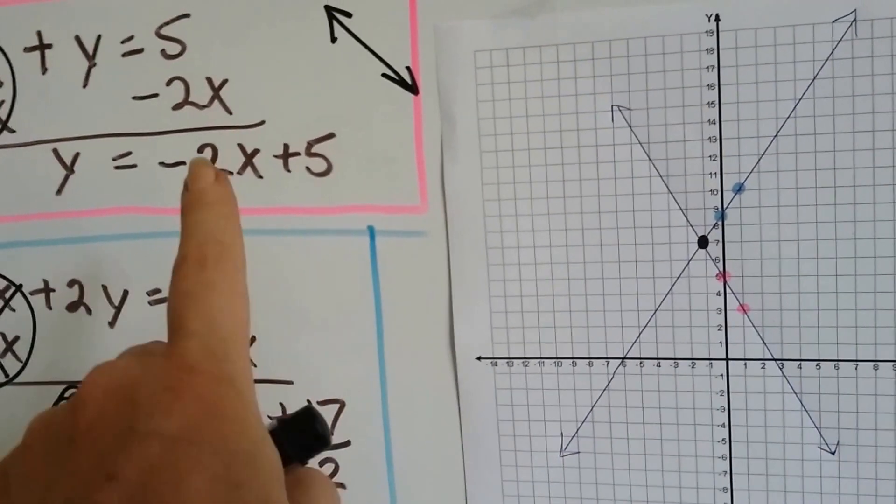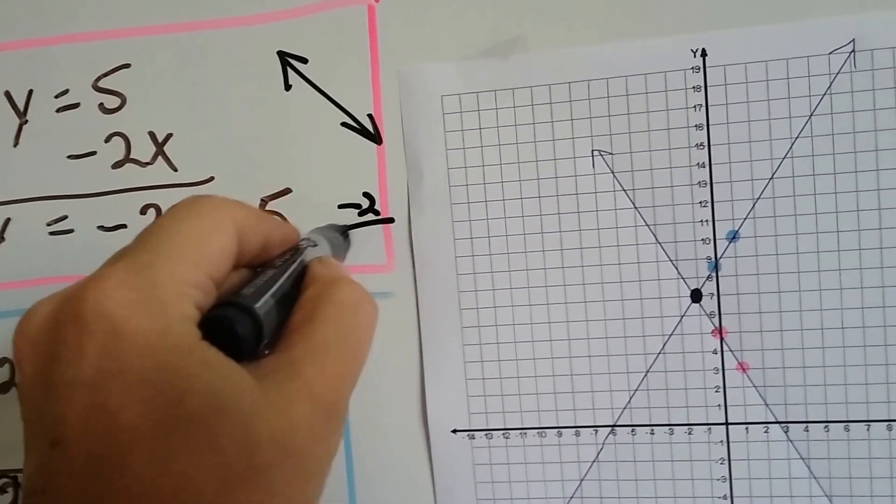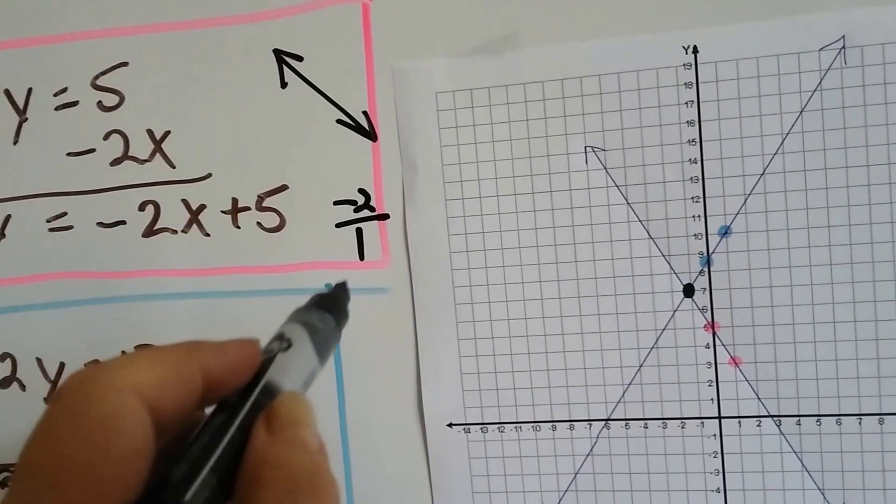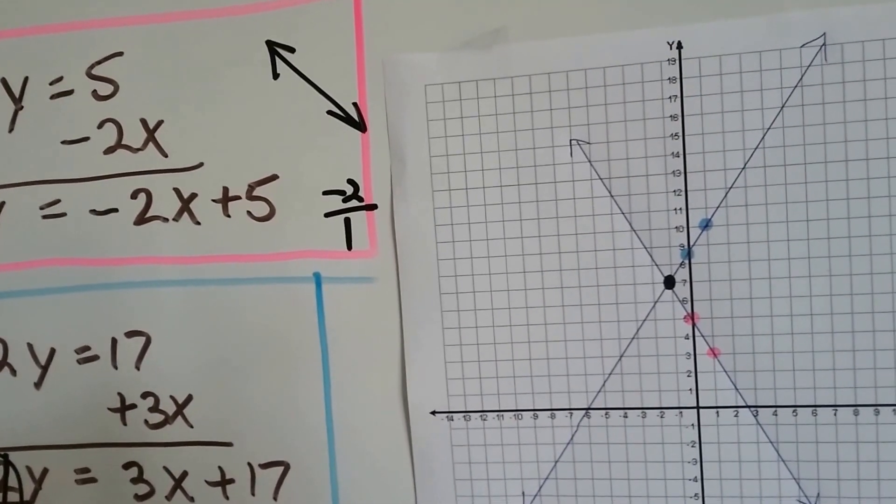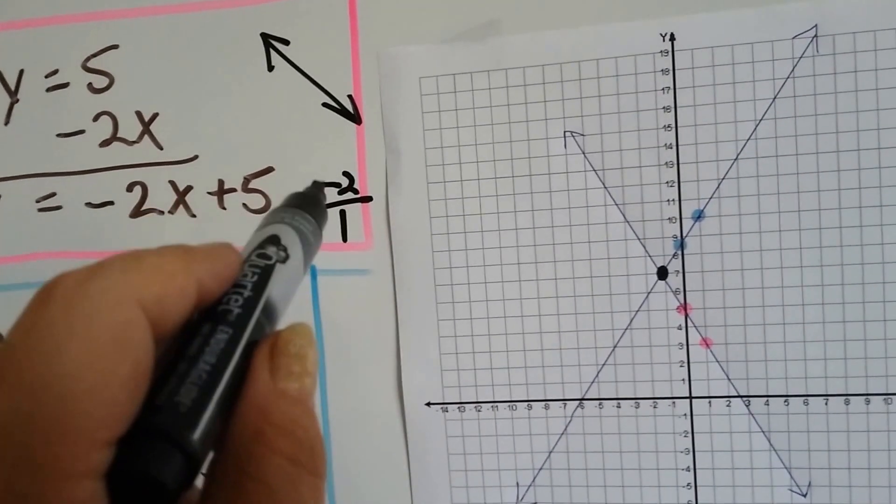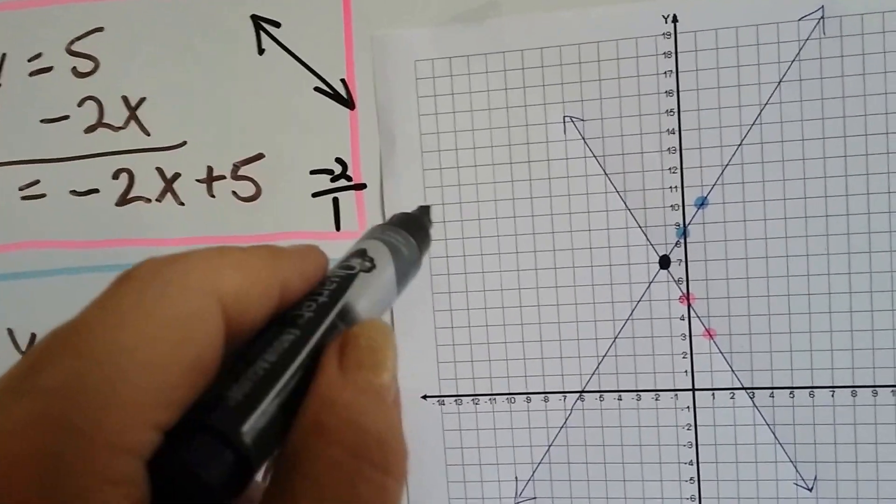And our slope is a negative 2. So that would be, for rise over run, that would be a negative 2 over a 1. Rise over run, because negative 2 over 1 is negative 2 as a fraction. So that means we have to go down 2 and over 1, and our line is going to fall to the right.